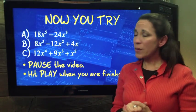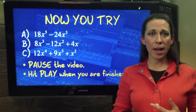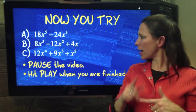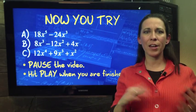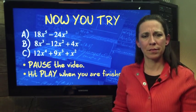So here's some examples for you to try. Go ahead and pause the video, look for a GCF, factor it out, show what's left, and then go ahead and hit play when you've tried them. Pause it. Go ahead and try it.